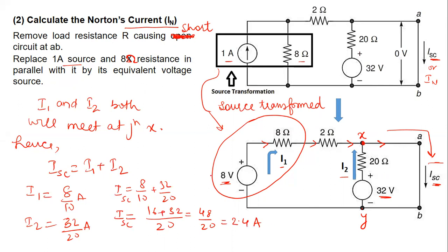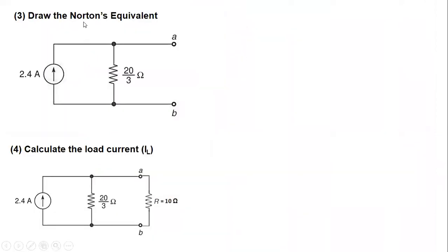So the third step that is to determine, to draw the Norton's equivalent. So the Norton's equivalent is basically the Norton's current or short circuit current and the Norton's resistance connected. So this is the Norton's equivalent of the given electrical circuit.